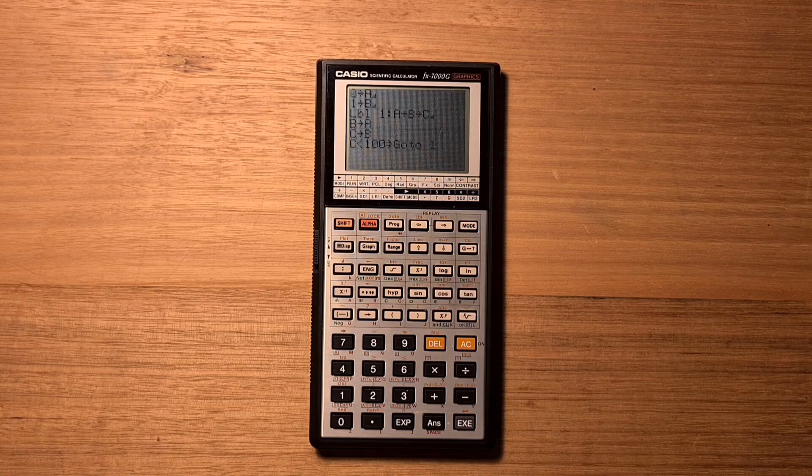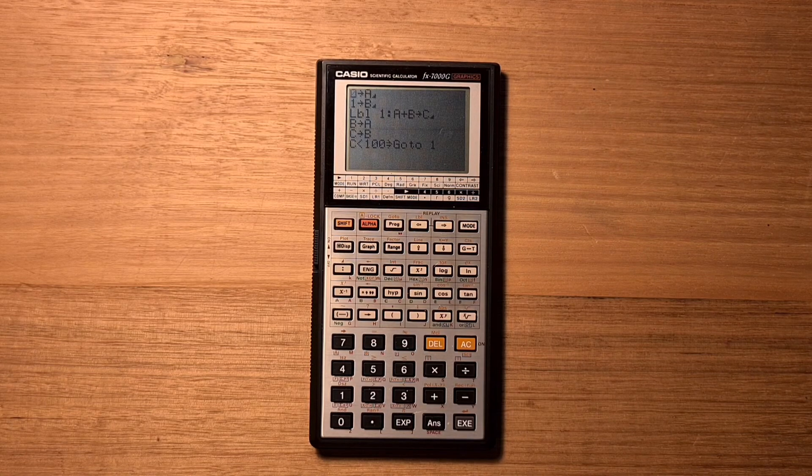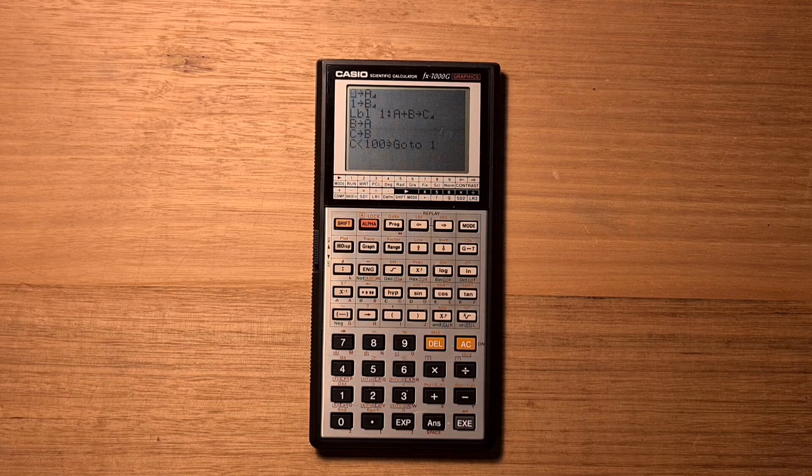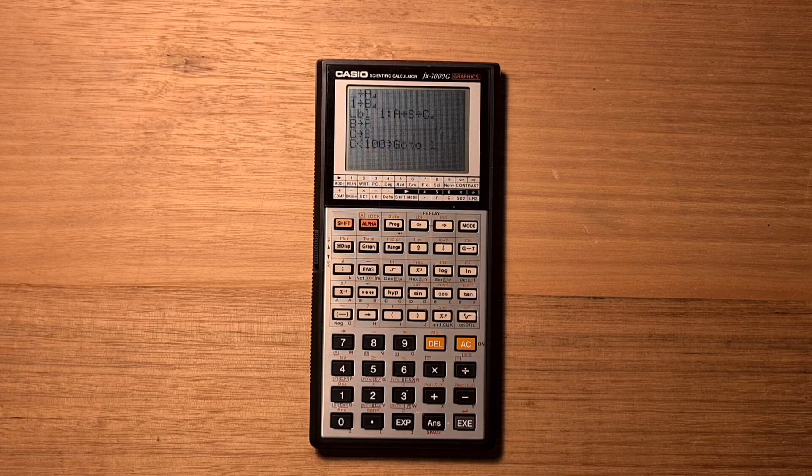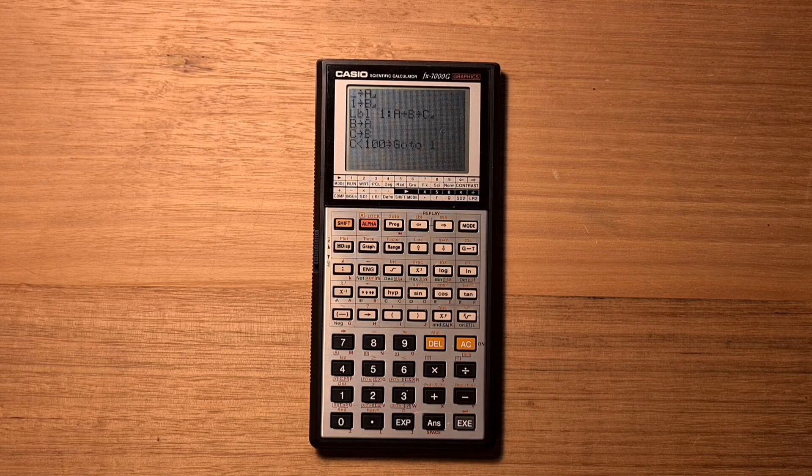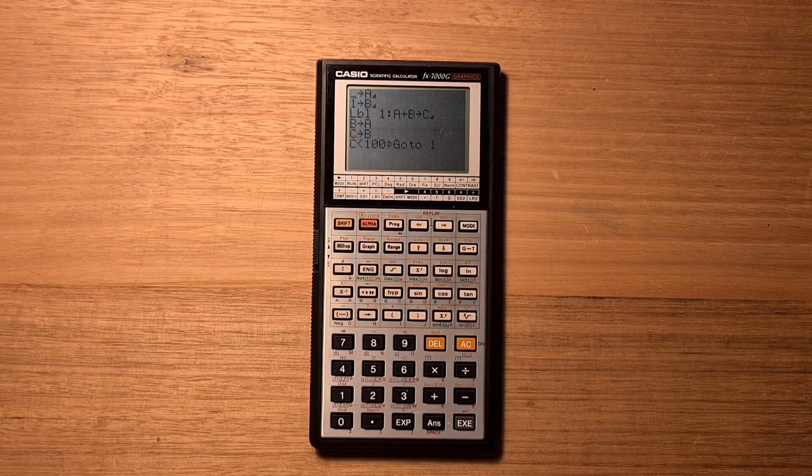The 7000G was clearly very influential, establishing the form factor and user experience patterns for graphing calculators that are still in use today. And you can pick these up surprisingly cheaply on eBay. Even ones in good condition run for less than $30.